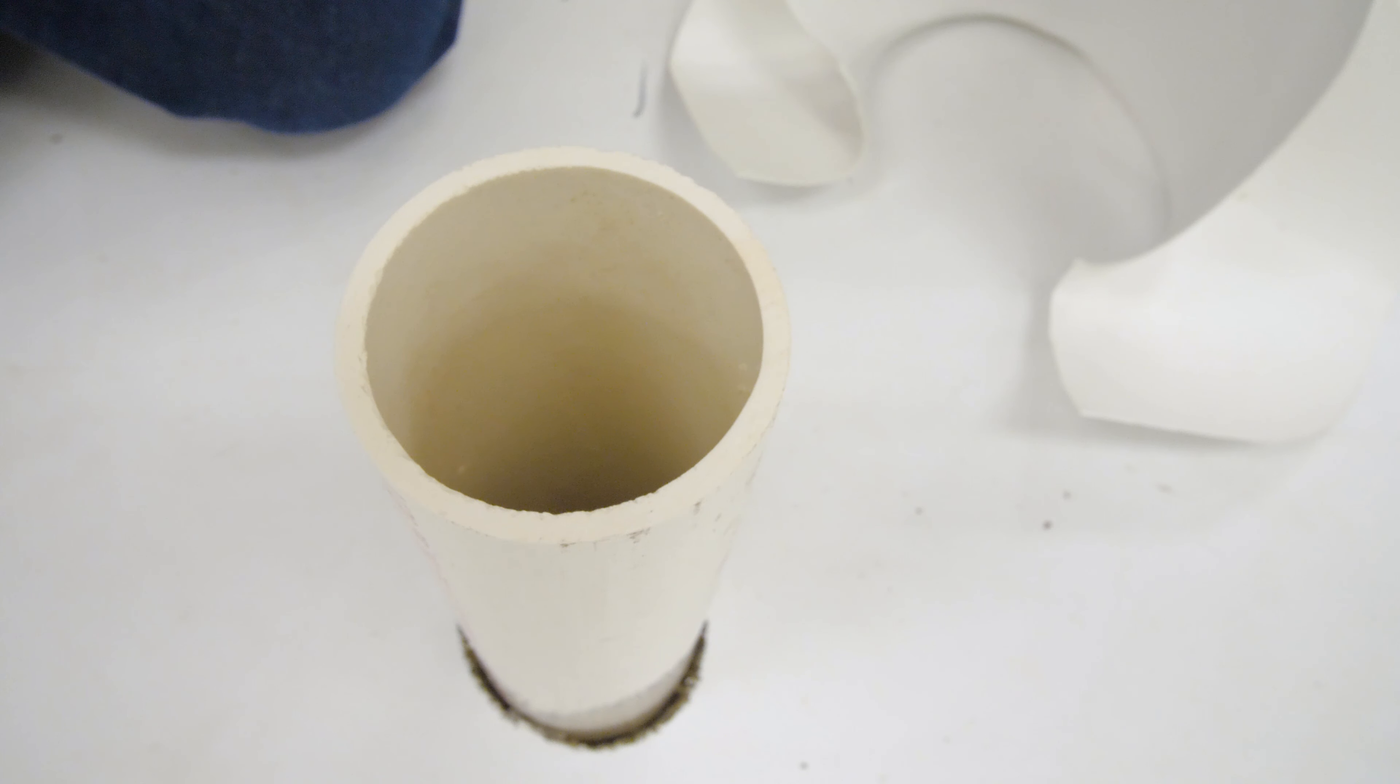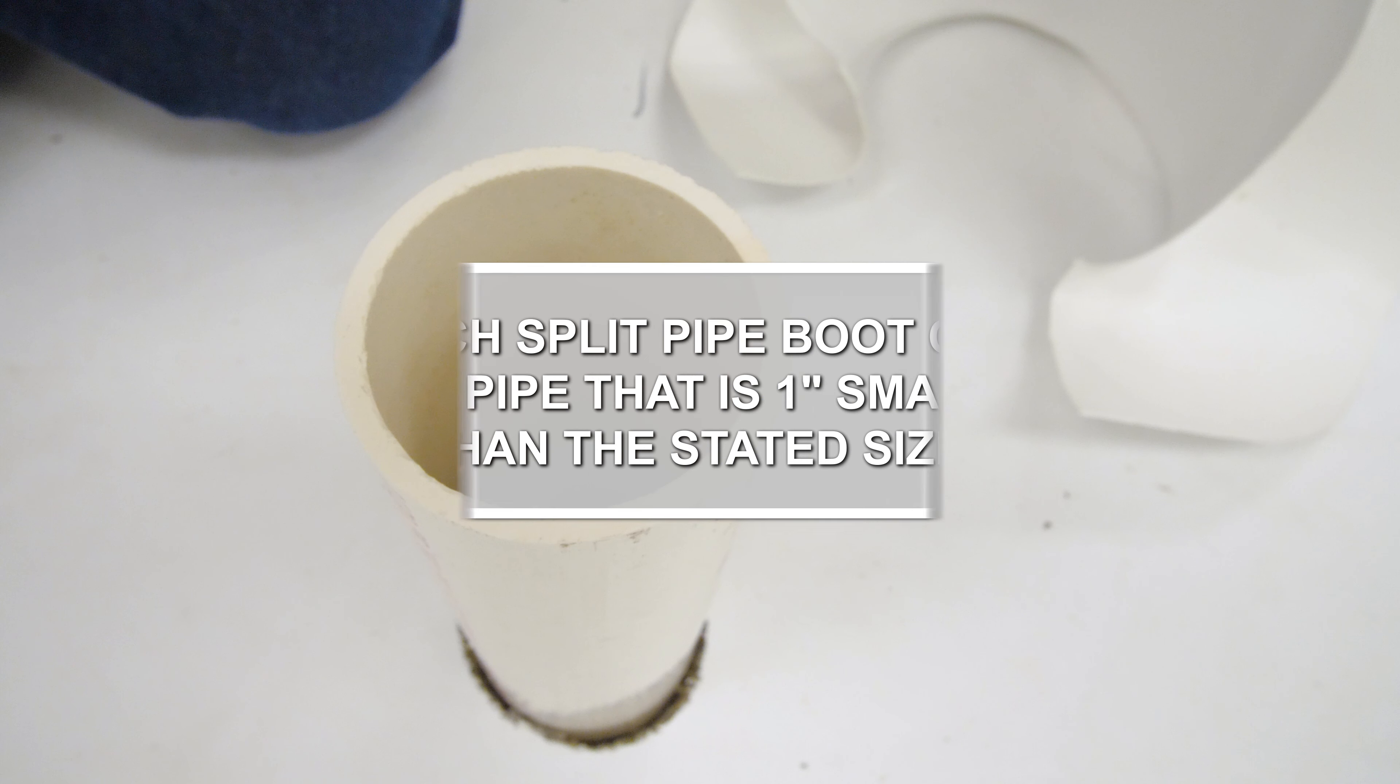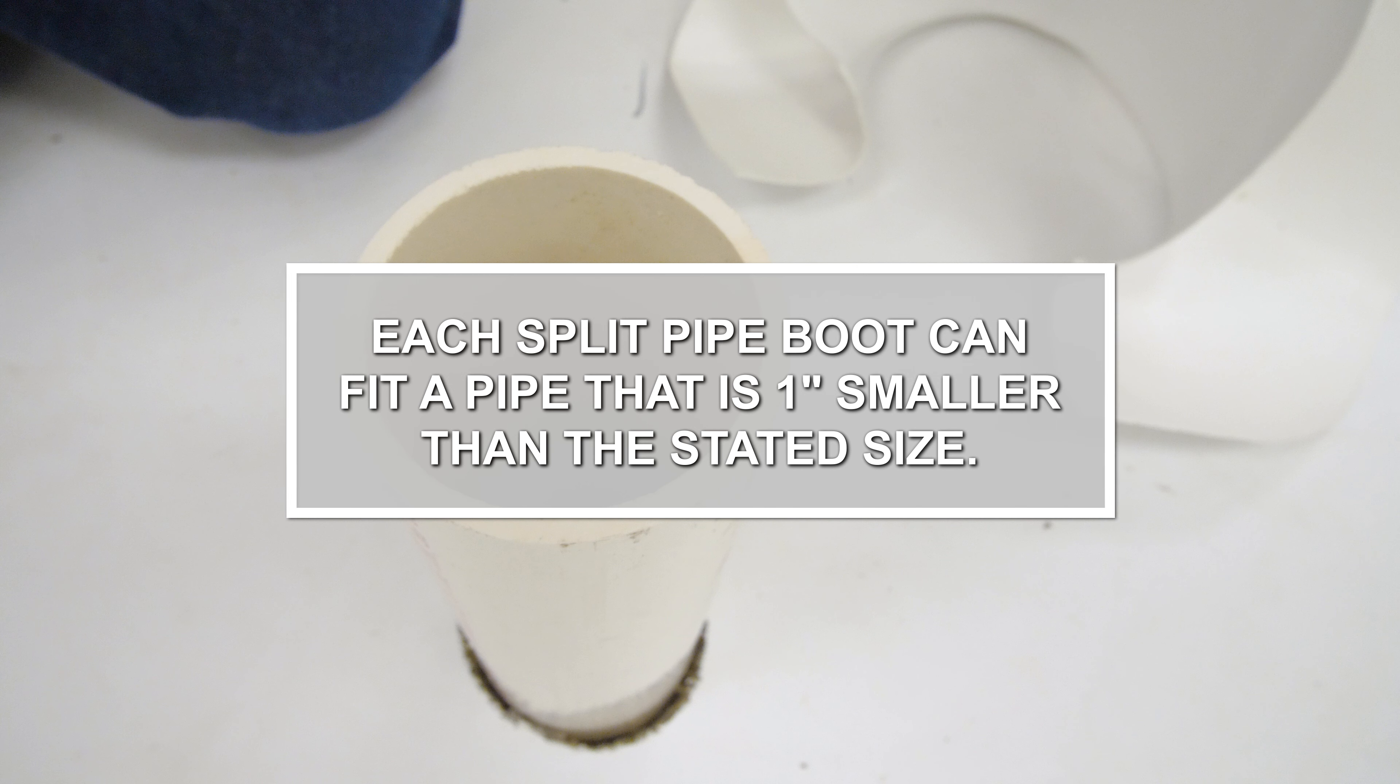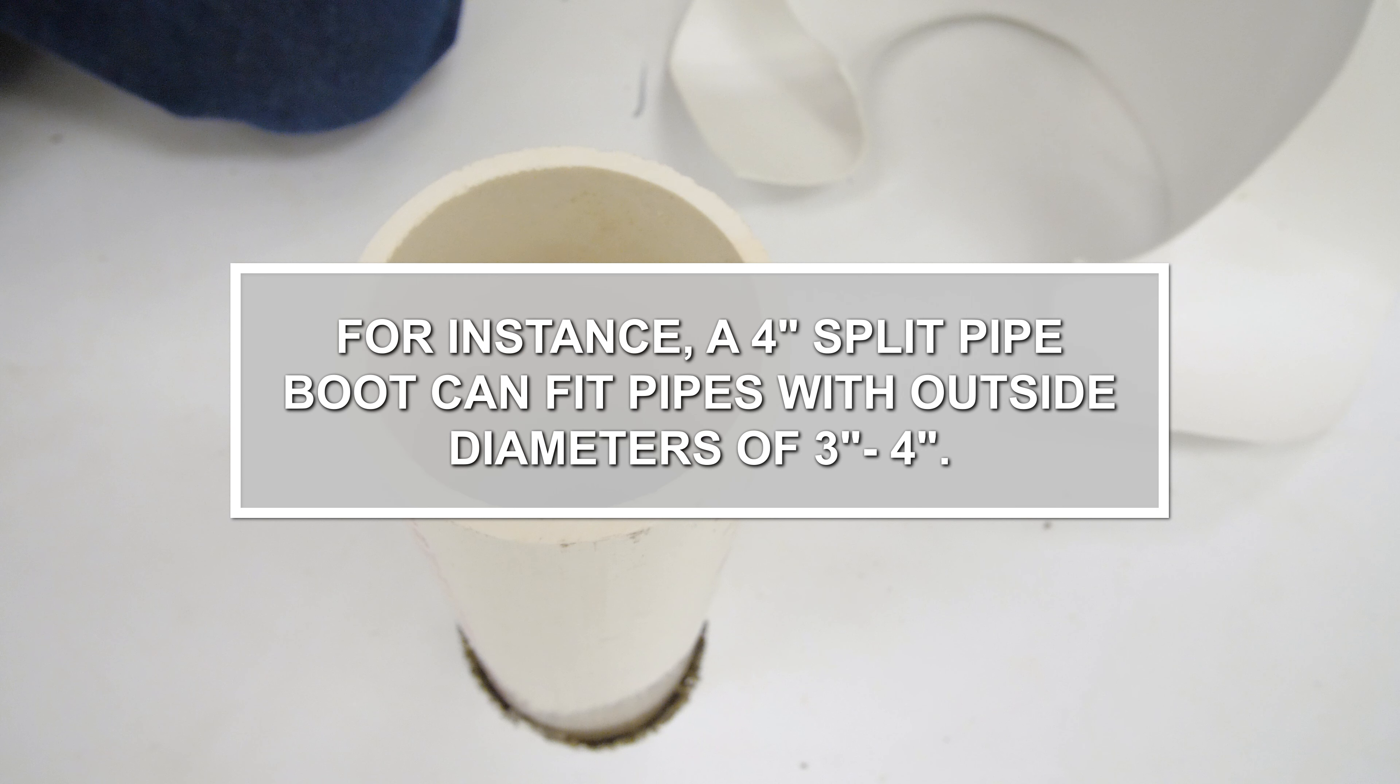Consequently, a 4 inch split pipe boot would be required. Each split pipe boot can fit a pipe that is 1 inch smaller than the stated size. For instance, a 4 inch split pipe boot can fit pipes with outside diameters of 3 inches to 4 inches.